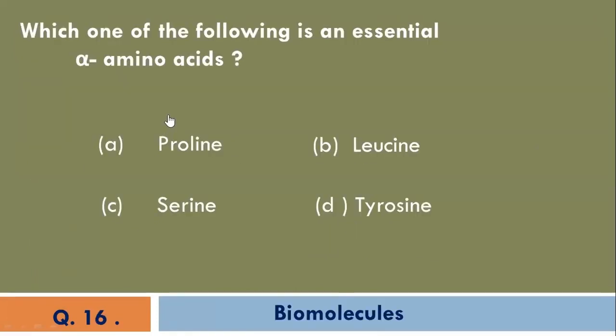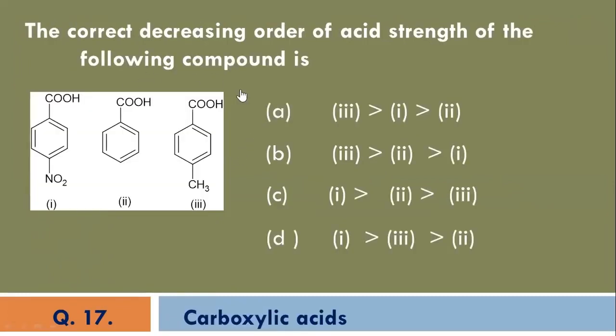Which one of the following is an essential alpha amino acid? The answer is leucine is essential alpha amino acid. The correct decreasing order of acid strength of the following compound is, C is the correct option.